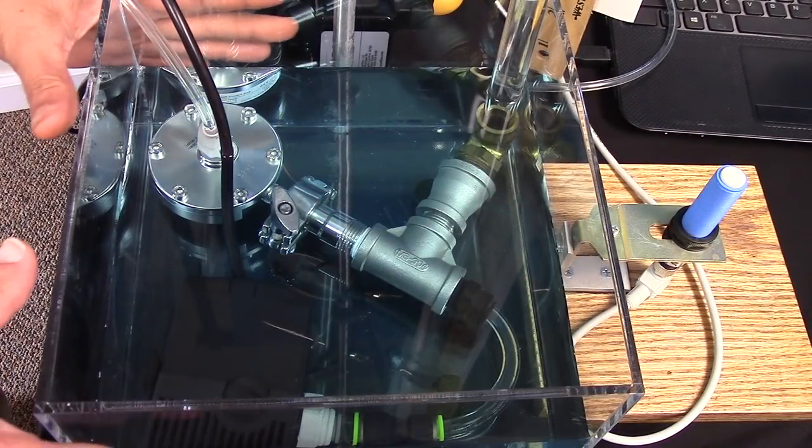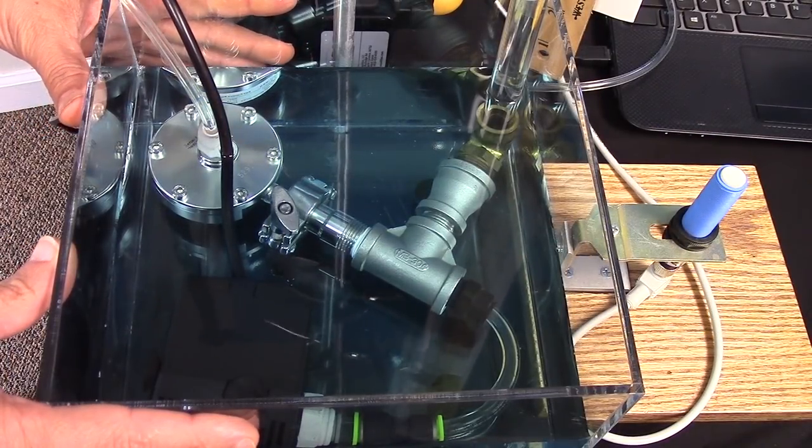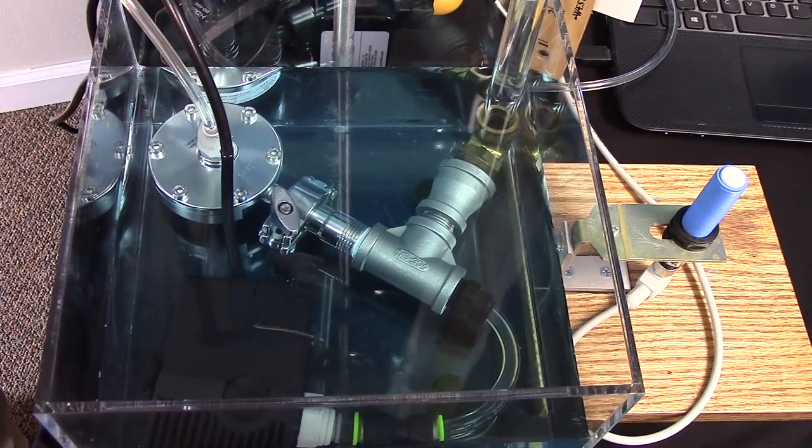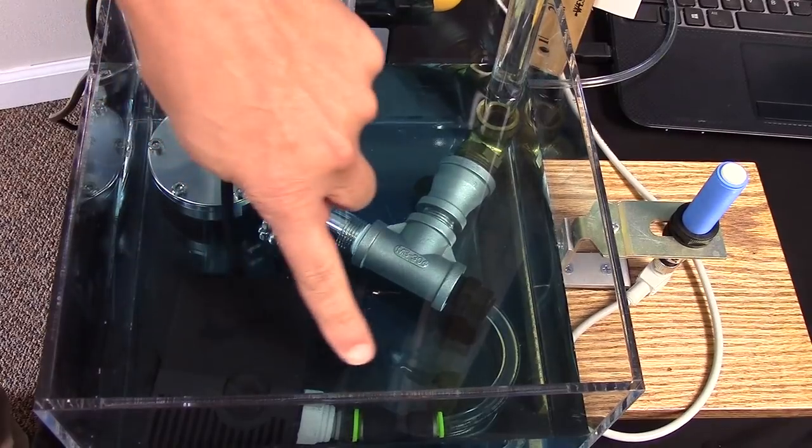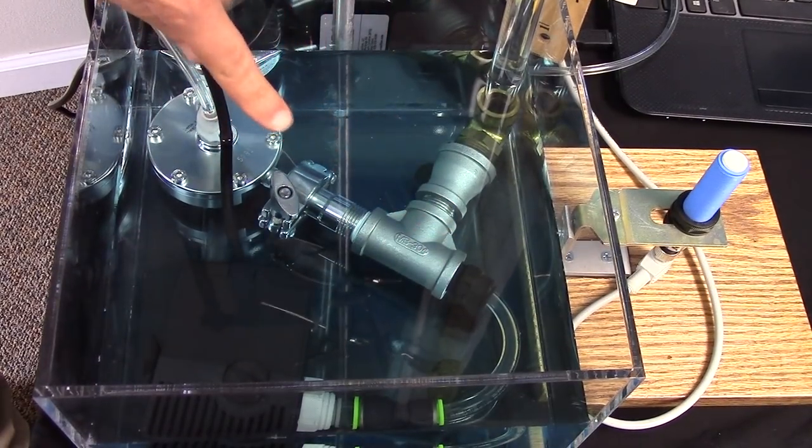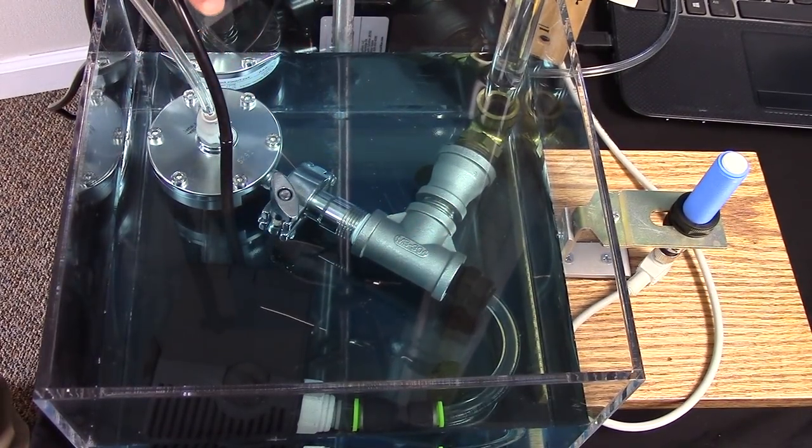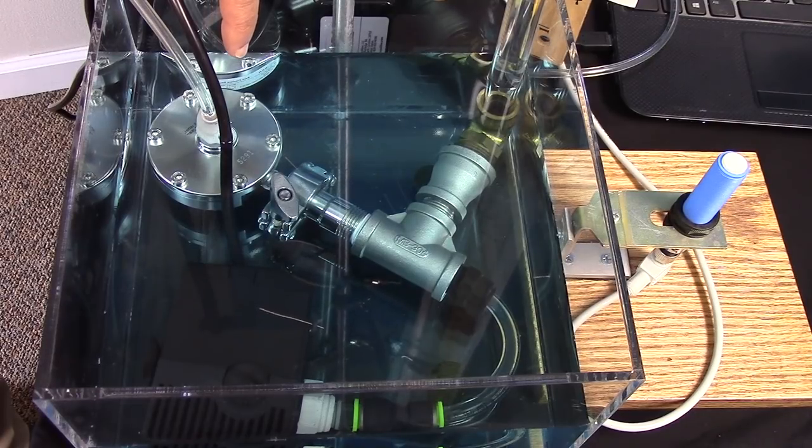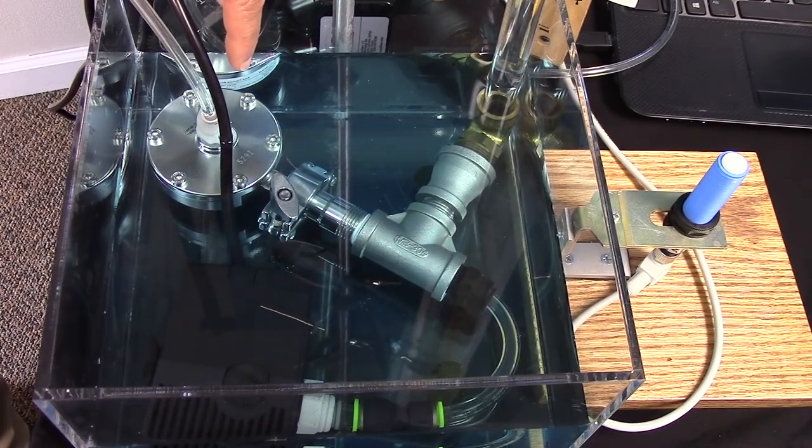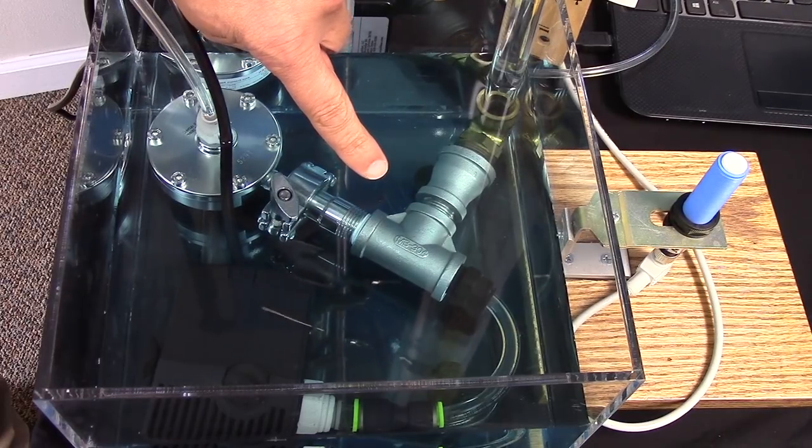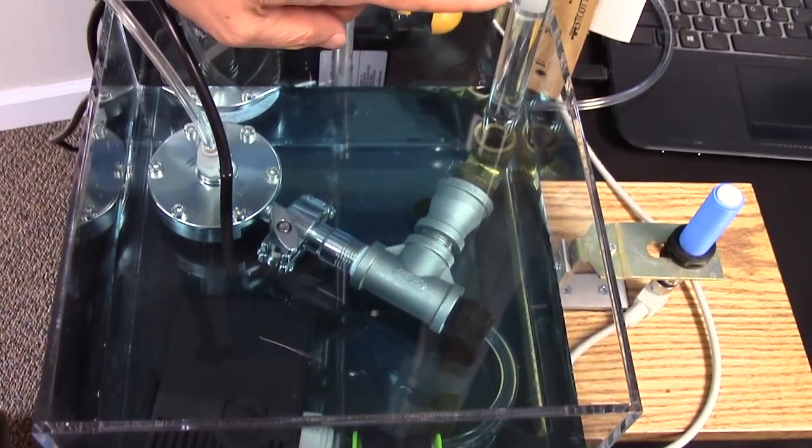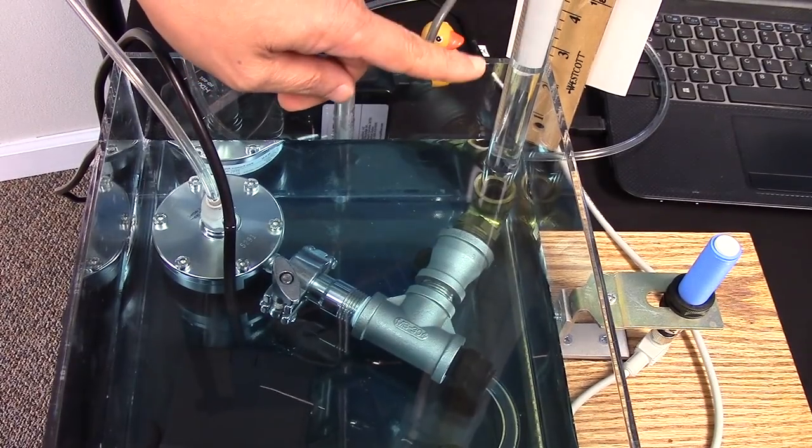For our demonstration, we have a tank that is filled with blue colored water. Submerged in the tank is a pump. The output of the pump is controlled by a back pressure regulator. That's this stainless steel disc seen here. The back pressure regulator controls the output pressure of the pump, which is right here, and that is also displayed in this column of fluid.